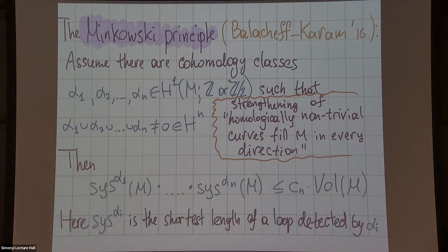Here you can bound not just the shortest systole, but once you've chosen those classes you can measure the lengths of loops detected by each of those cohomology classes. For each cohomology class you can compute the restricted systole. It will be in general bigger than just the systole, and you have this bound for the product.